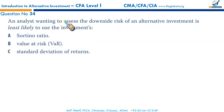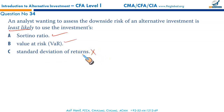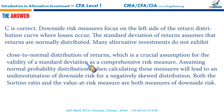An analyst wanting to assess the downside risk of an alternative investment is least likely to use the investment's Sortino ratio or value at risk? Both Sortino ratio and value at risk are measures of downside risk, so the analyst would use both. It has to be C — using a measure that assumes normally distributed returns — because many alternative investments do not exhibit a normal distribution of returns. Assuming normal distribution would result in underestimation of downside risk for a negatively skewed distribution. That makes C least likely.